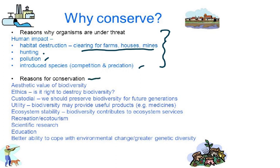Why are we so worried about certain animals getting extinct? Number one, aesthetic value of biodiversity — we all love nature. Ethics: is it right to destroy biodiversity? Then custodial: we should preserve biodiversity for future generations; we owe it to the next generations. Then utility: biodiversity may provide useful products like medicines. A lot of plants have very important medicinal value.